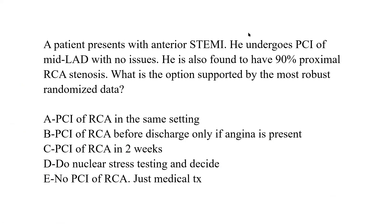Moving on: a 60-year-old man presents with anterior STEMI. He undergoes PCI of the mid-LAD with no issues. He is also found to have 90% proximal RCA stenosis. What is the option supported by the most robust randomized data concerning what to do with that 90% RCA? Options are: PCI of RCA in the same setting; PCI of RCA before discharge only if angina is present; PCI of RCA in two weeks; nuclear stress testing and decide; or no PCI of RCA — just medical therapy.